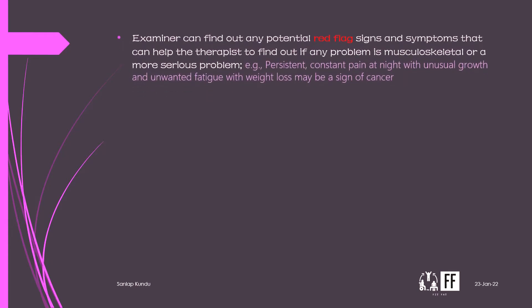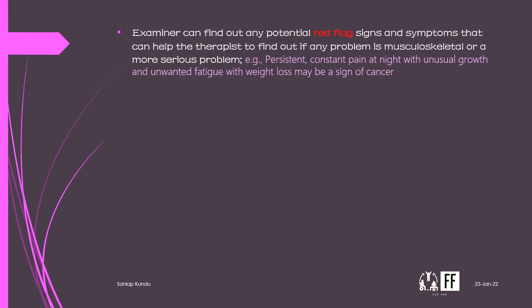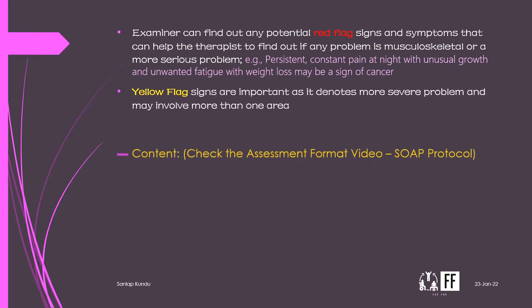From the history, the examiner can find out any potential red flag signs and symptoms that can help the therapist determine if any problem is musculoskeletal or a more serious concern. For example, persistent constant pain at night with unusual growth, unwanted fatigue, and weight loss may be a sign of cancer — this is a red flag.